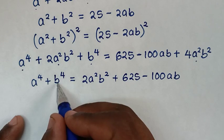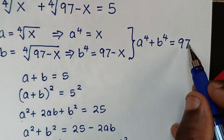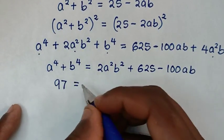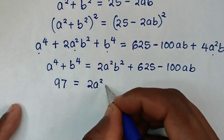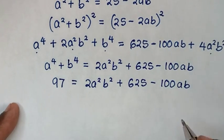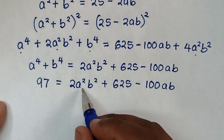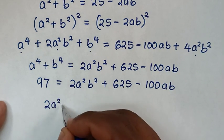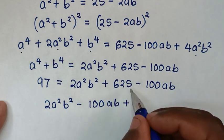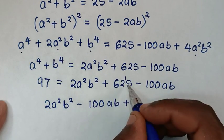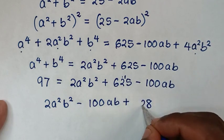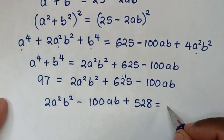Since a⁴ + b⁴ = 97, we substitute to get 97 = 2a²b² − 100ab + 625. Rearranging: 2a²b² − 100ab + 528 = 0.